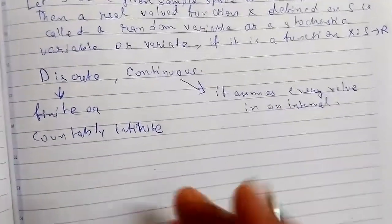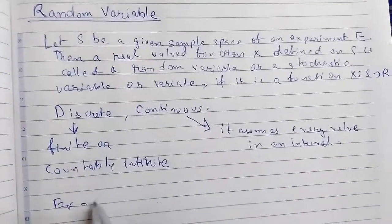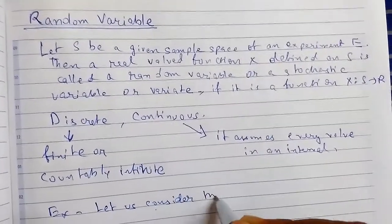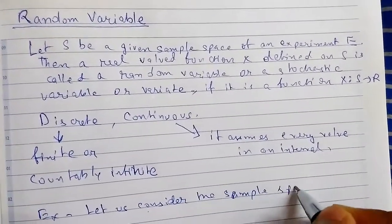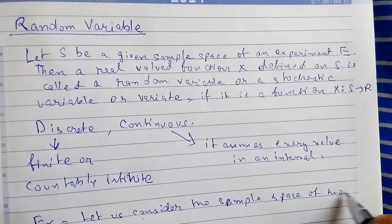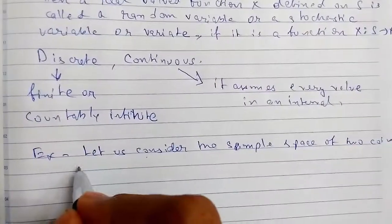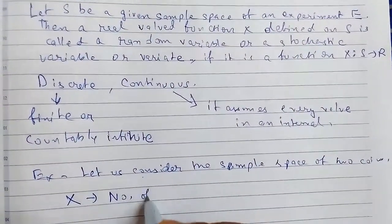So let me show you some examples by which we can explain random variables. Suppose, let us consider the sample space of two coins. Now let us define the event x which will be the number of heads.